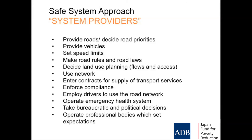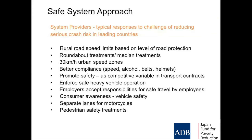System providers do all the things you'd expect. You are system providers. And the typical responses to reducing serious crash risk include rural road speed limits that reflect the level of road protection — is the road forgiving? — and roundabouts. Roundabouts are a fantastic treatment at intersections because they force traffic to slow down, and crashes when they occur are not right-angle but slightly glancing, so the intensity of force is less.